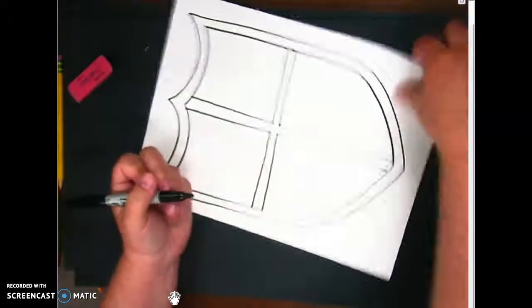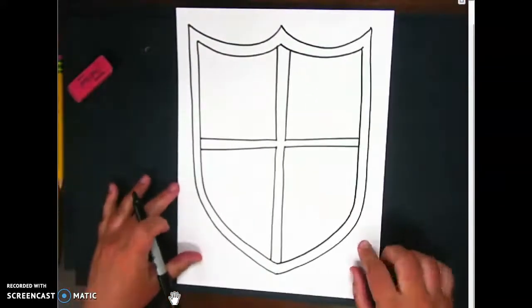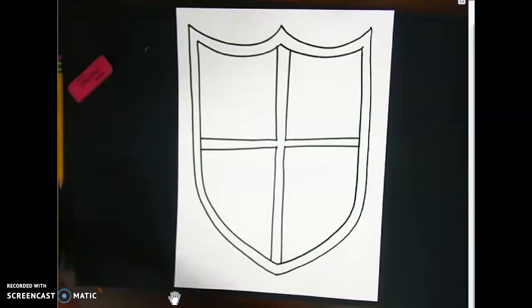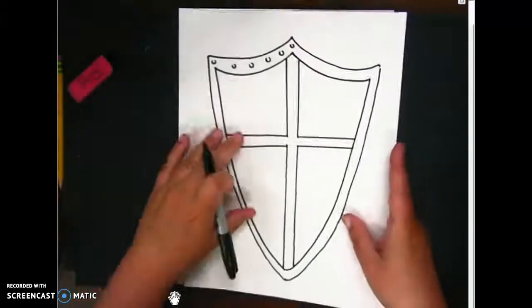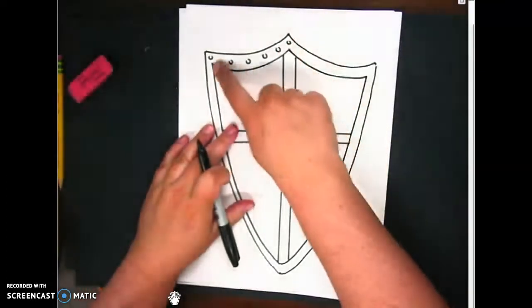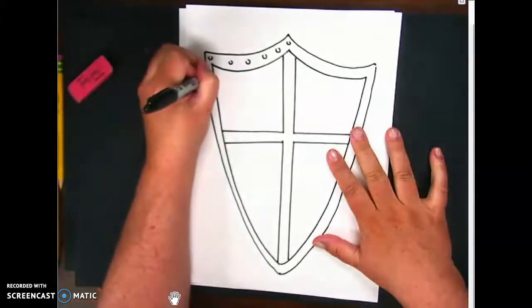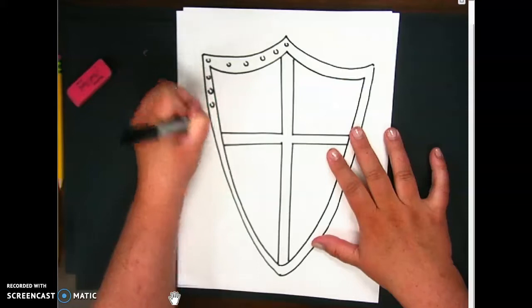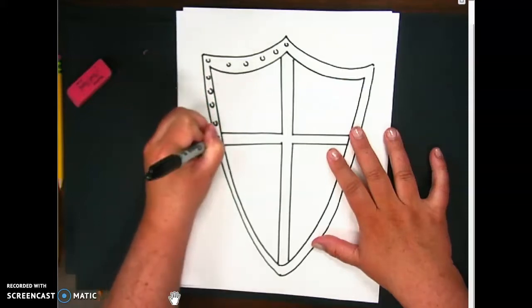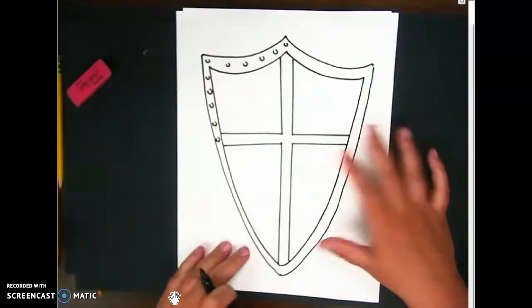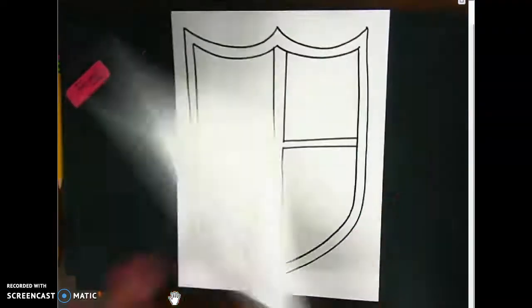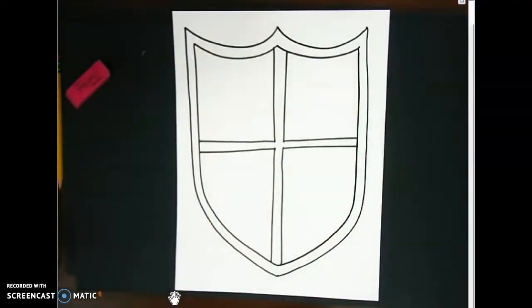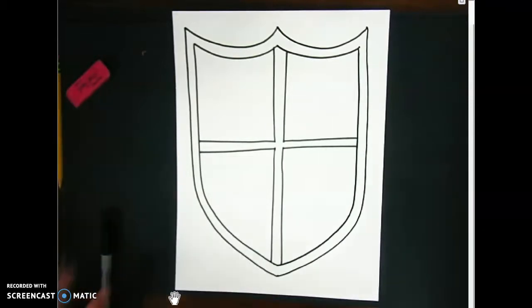And there we have it, our basic shield! If you want to get fancy, you could go ahead and add little rivets around the edge. They're just mostly circles, and it's where some of the frame connects. You don't have to do that, but this is how to make a basic medieval shield. Good luck and get creative!